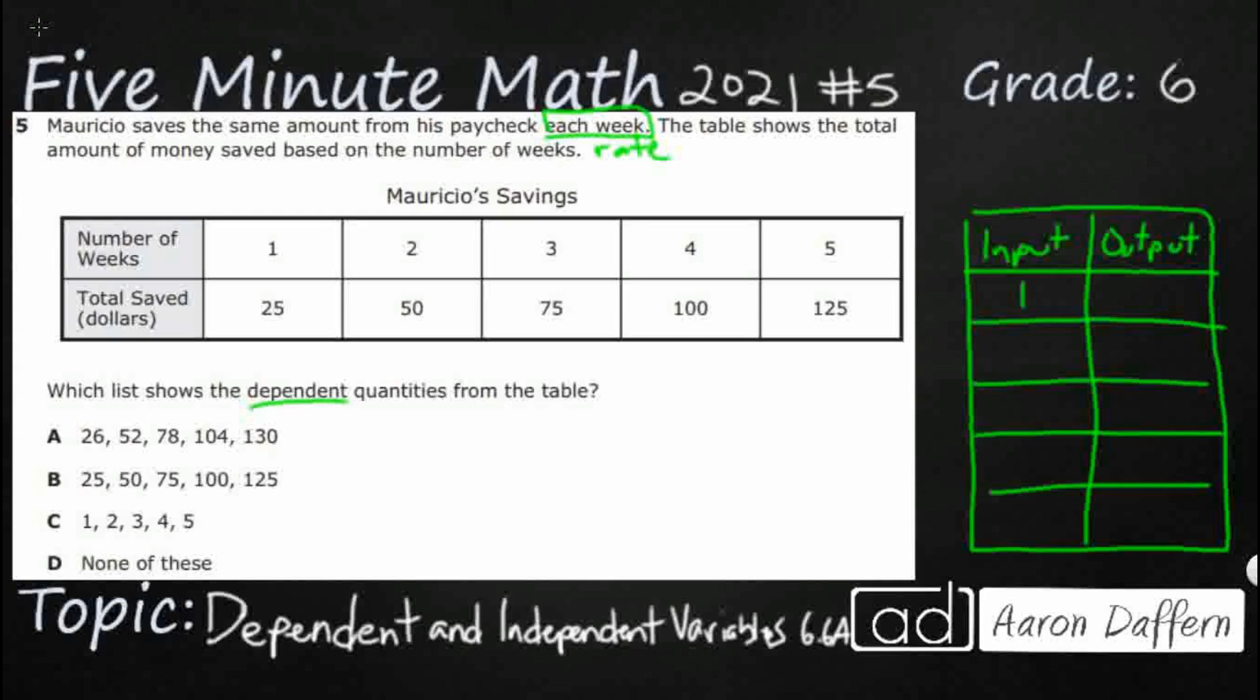So, number of weeks is going to be our input: one, two, three, four, five. And then our output is going to be our total saved in dollars: twenty-five, fifty, seventy-five, one hundred, one twenty-five.